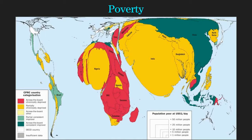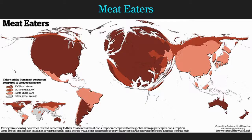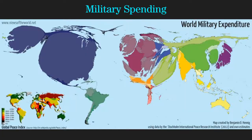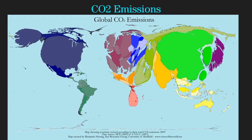Here's all the meat eaters of the world — the United States and Europe are very very large, Africa almost non-existent. Military spending: who spends the most on their military? The United States is clearly king here. Japan spends quite a bit of money on their military. CO2 emissions: who is causing the world's pollution problem? And this is no surprise — the developed countries of the world, like the United States and China and Japan, and the European countries as well. South Africa is quite large here.